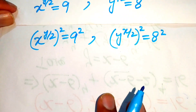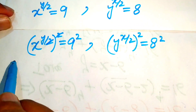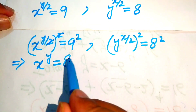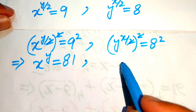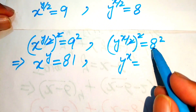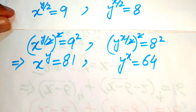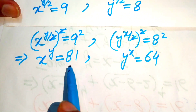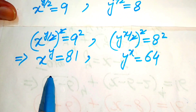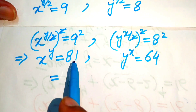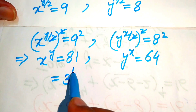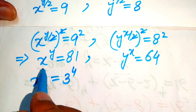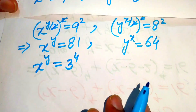After simplification, the 2s cancel and we get x to the power of y equals 9 squared equals 81, and y to the power of x equals 8 squared equals 64. Now we make prime factors: 81 equals 3 to the power of 4, and on the left hand side we have x to the power of y. Comparing both sides, base with base and exponent with exponent.